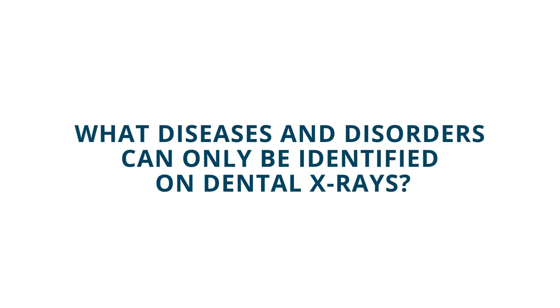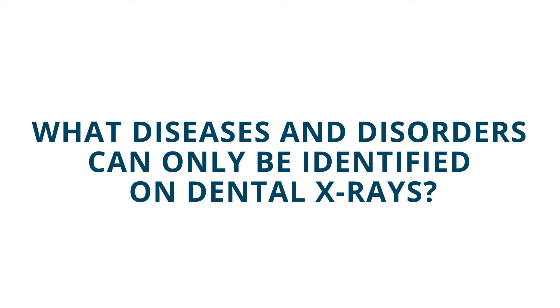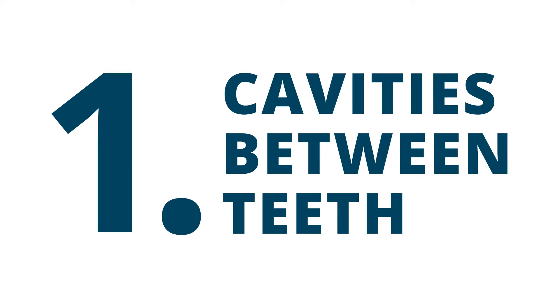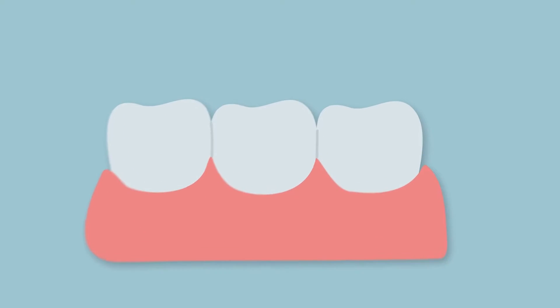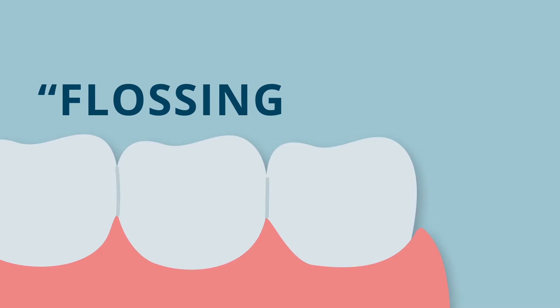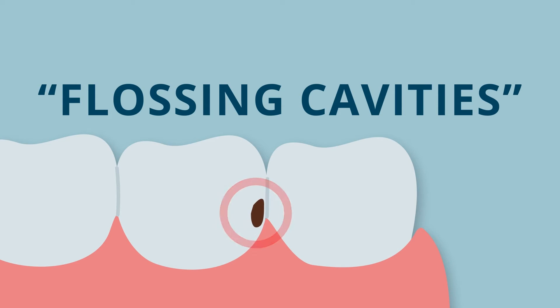What diseases and disorders can only be identified on dental x-rays? Number one: cavities between teeth. Many cavities develop between teeth. These flossing cavities begin on the side of the tooth and work their way inward, only becoming visible to the eye once significant tooth enamel has been destroyed.